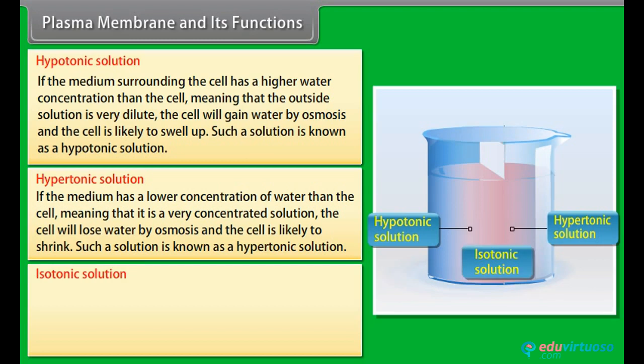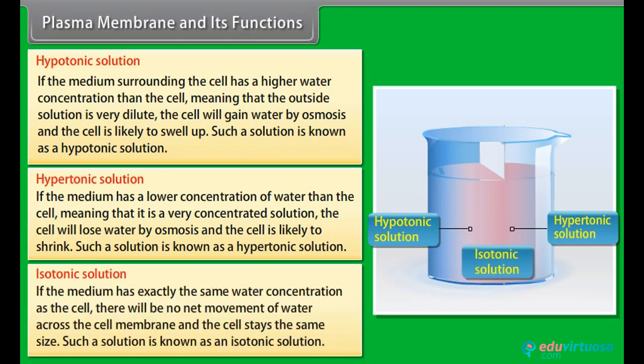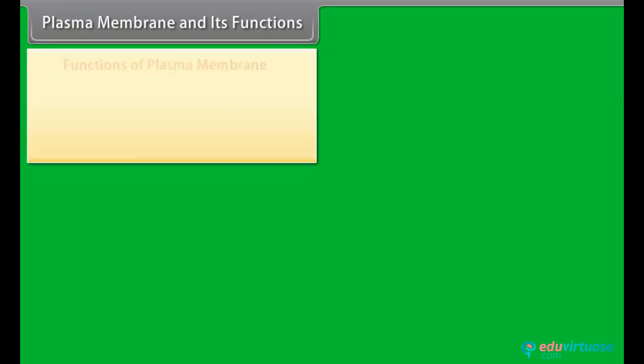Isotonic solution: If the medium has exactly the same water concentration as the cell, there will be no net movement of water across the cell membrane and the cell stays the same size. Such a solution is known as an isotonic solution.